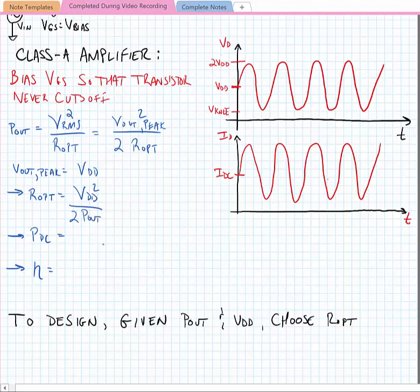In a Class-A power amplifier, we always have a DC average current IDC, and we can find that the DC power consumed is equal to IDC times VDD. We know that IDC is equal to VDD divided by R-Opt in the transistor. So we can find that the power consumed by DC is equal to VDD squared divided by R-Opt.